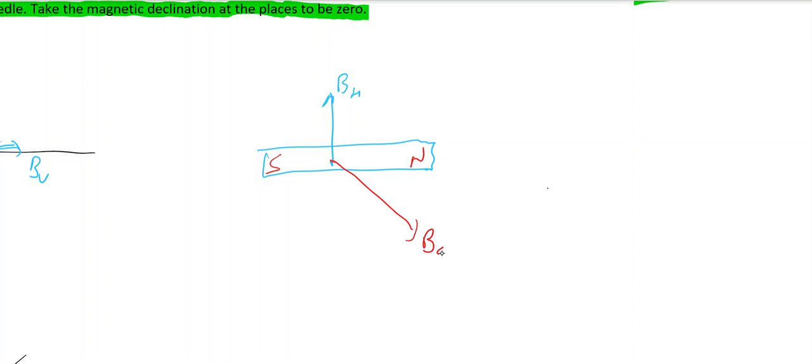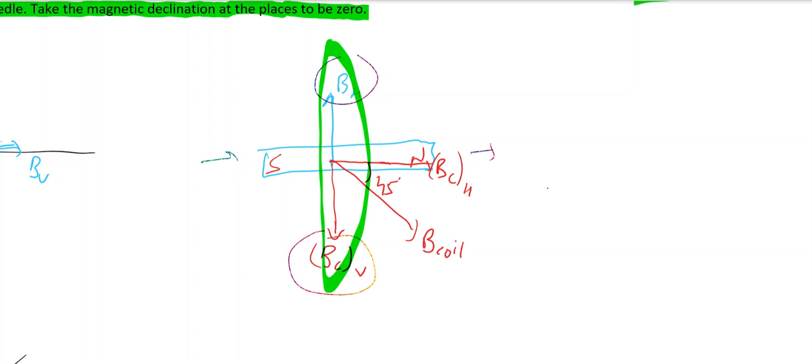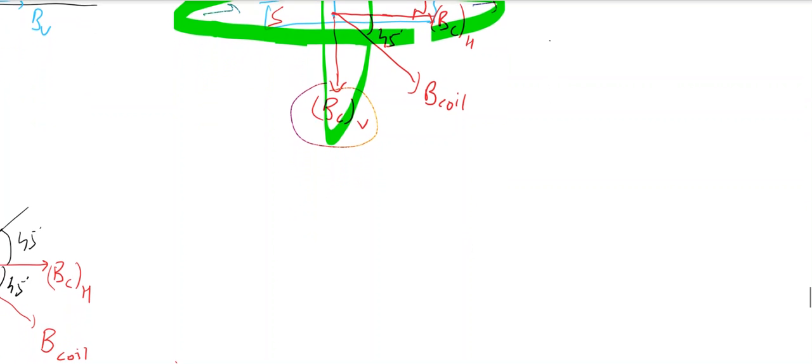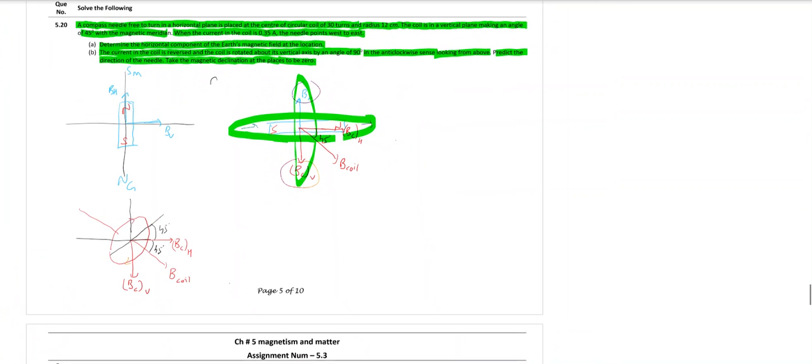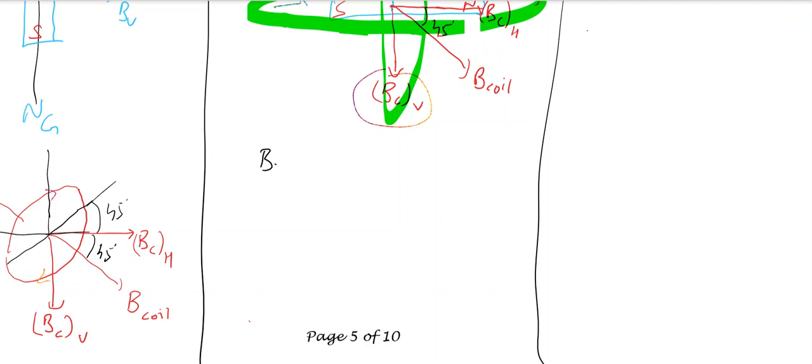This is the field of the coil and it has two components: this is B_coil horizontal and this is B_coil vertical. The angle is 45 degrees. So I can say that if the magnet is setting itself in this manner, these two must be the same. So there is no magnetic field along this line and then the resultant field is only horizontal.